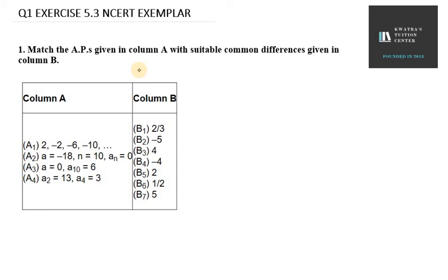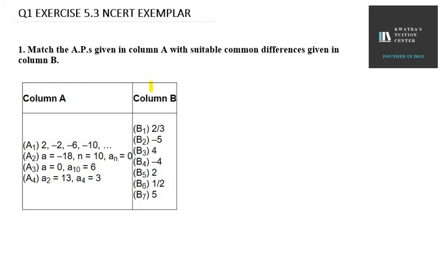Hello everyone, let's start with question number 1 from exercise 5.3. The question says: match the AP given in column A with the suitable common difference given in column B. So we need to find d from column B for each respective AP.